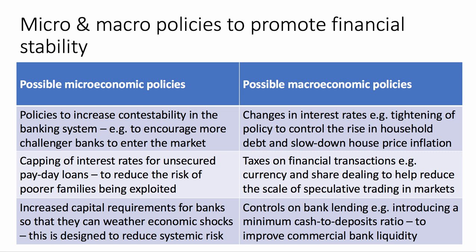A second micro policy could be an intervention in the market to introduce a cap on the interest rates charged by payday lenders for unsecured loans. That would be a classic intervention to address monopoly power in the market and also to cut the risk of poor families being exploited. Increased capital requirements for banks could also be a micro policy — requiring specific banks to increase their capital buffers and asset-to-loan ratios, designed to reduce systemic risk.